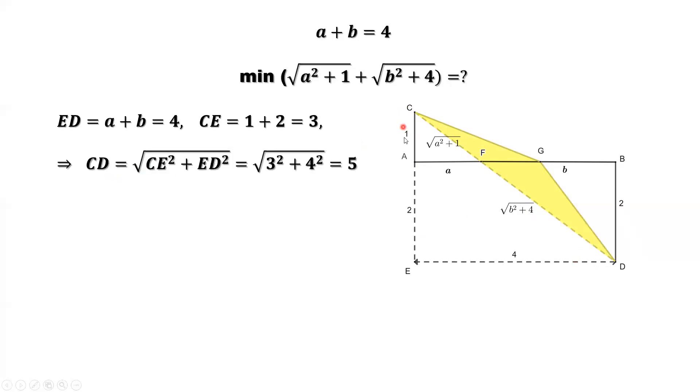Square root of c e squared plus e d squared, that's square root of 3 squared plus 4 squared, which is 5. So the answer is 5.